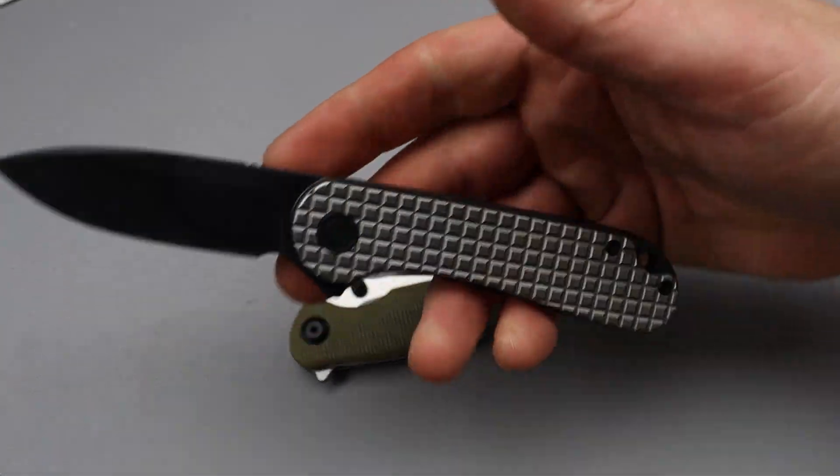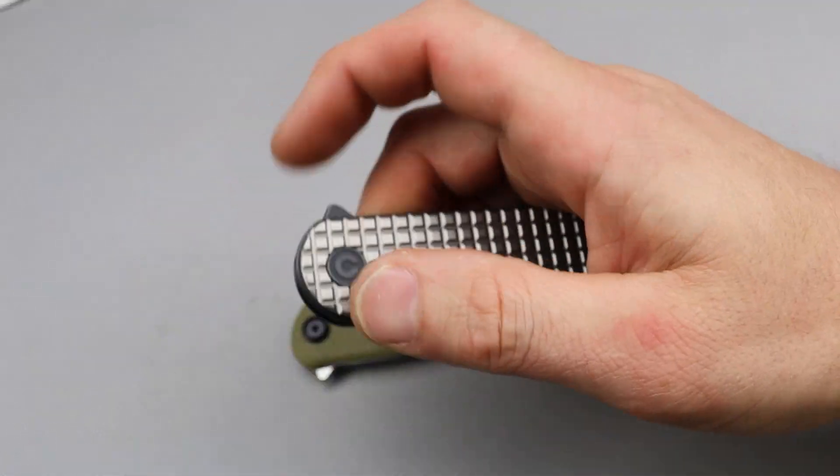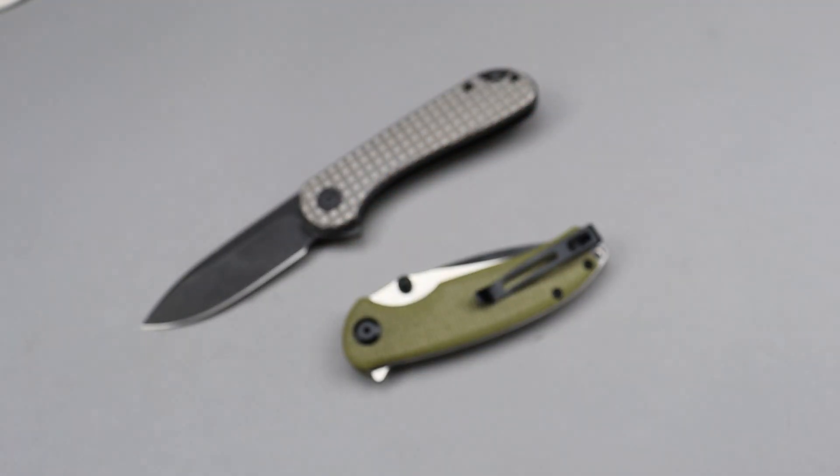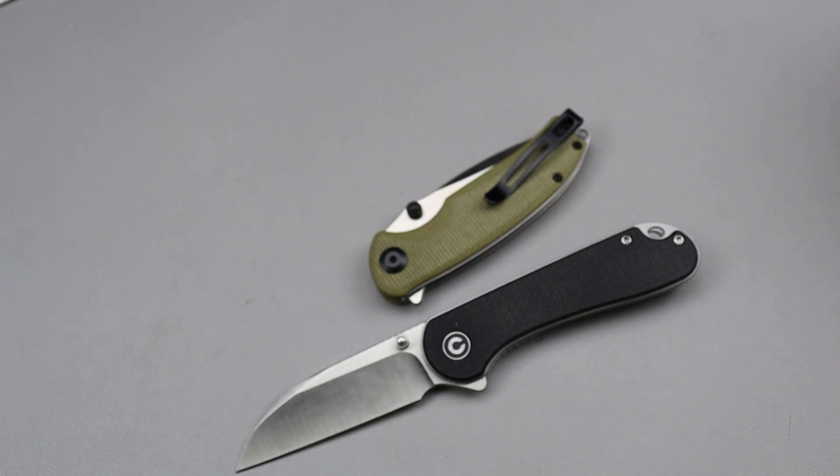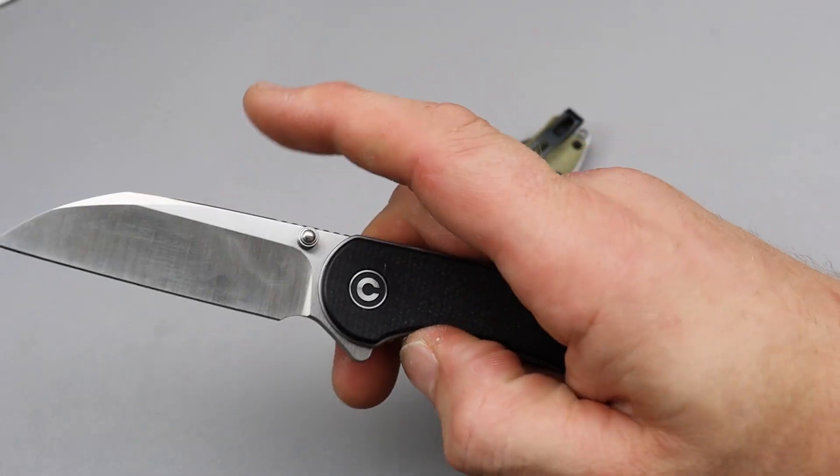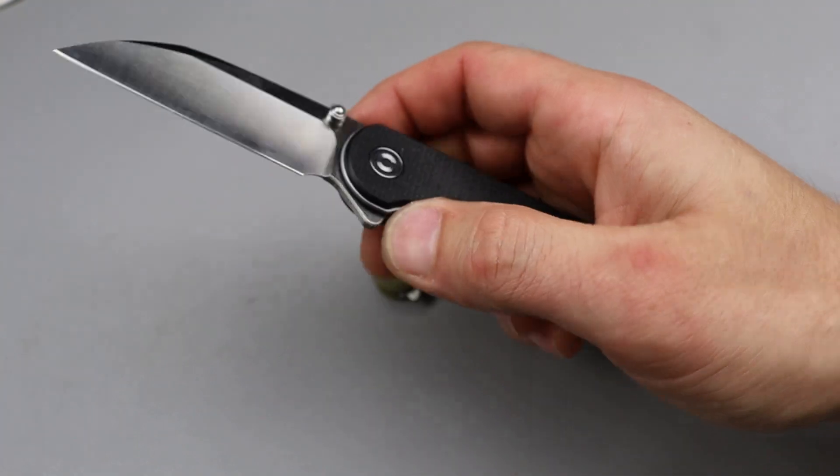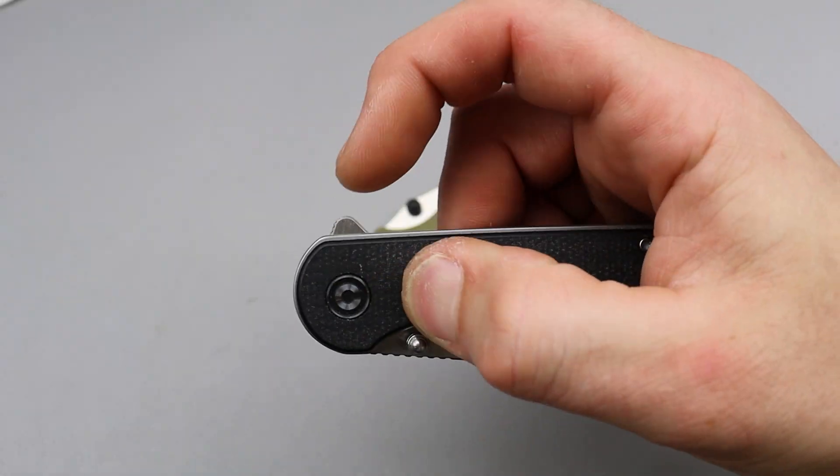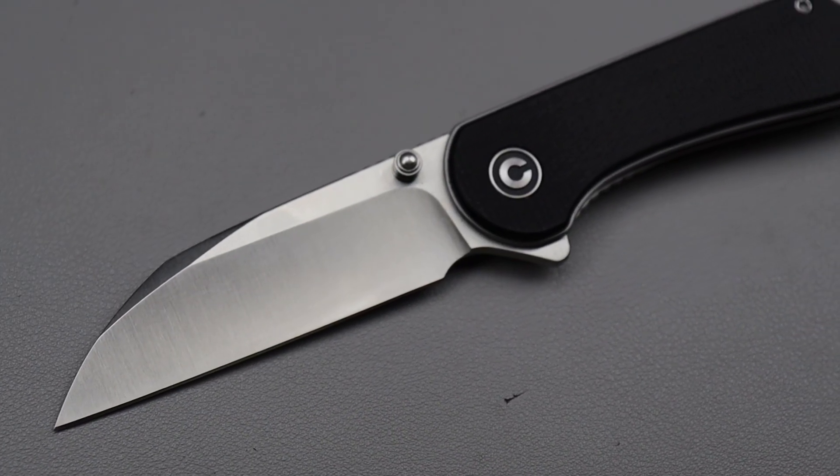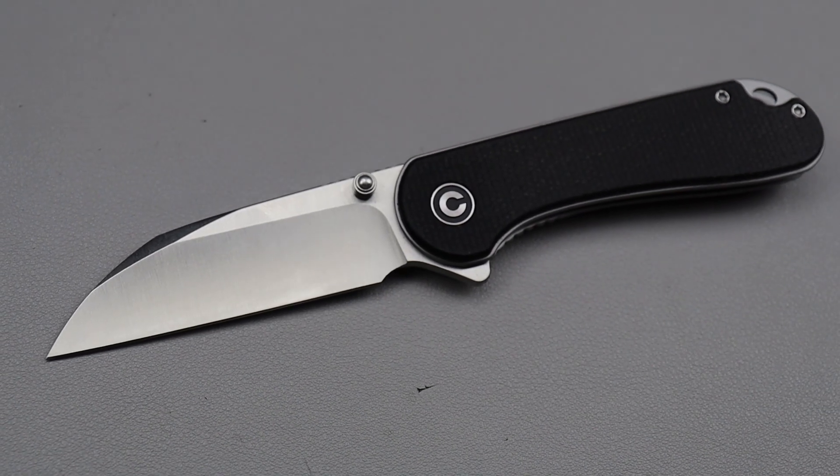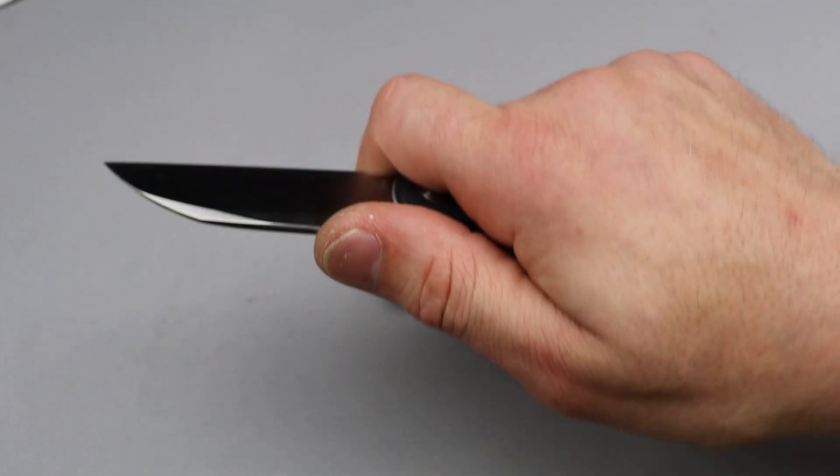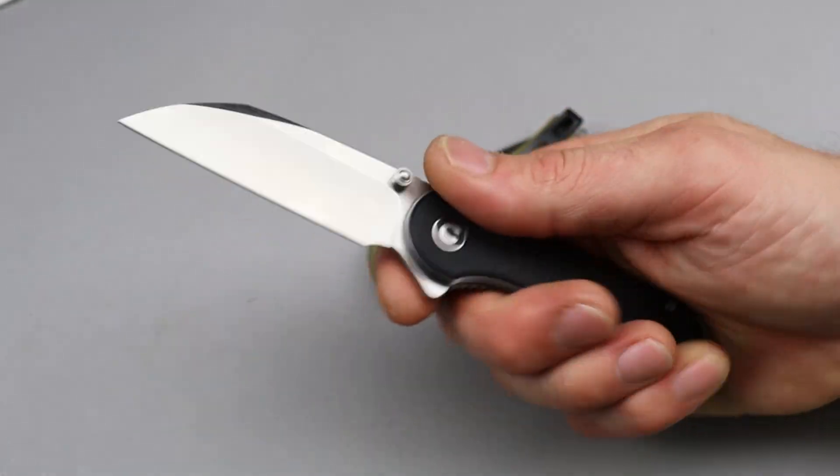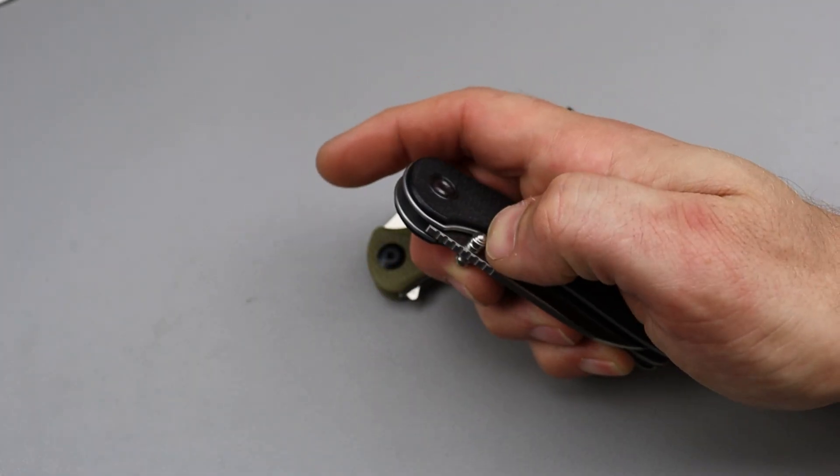It's actually very close and similar to something like the Civivi Elementum, which actually they now have the Elementum Warncliffe. We should just talk about that since we're talking about compact knives. You can't have a compact knife list without the Elementum, especially the new Warncliffe version because it's probably the best version yet as far as ones in this size. You guys know if you watch my videos that the large one is my favorite, but this is a full size knife. It's just a compact full size knife.